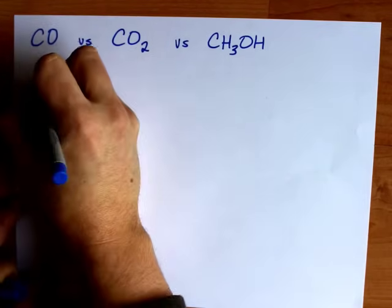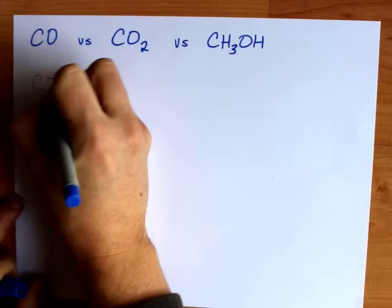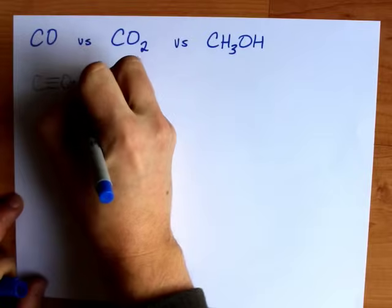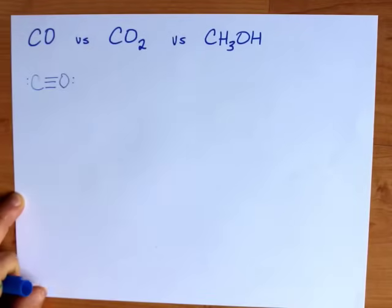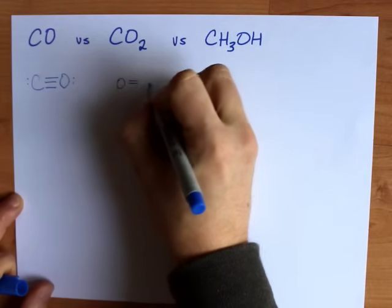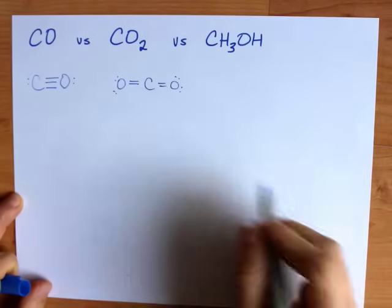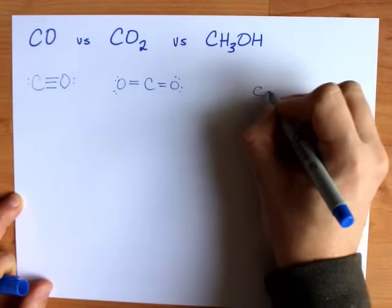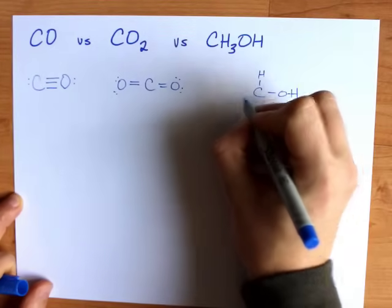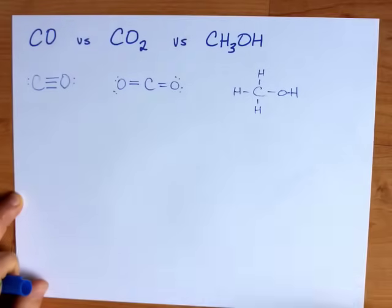The Lewis structure for carbon monoxide, even though I'm catching a lot of flack lately for drawing it this way even though it's correct, is a triple bond between carbon and oxygen. The Lewis structure for carbon dioxide is a double bond between carbon and each oxygen. And for methanol, I have carbon single bonded to the O, which is single bonded to the H, and then that carbon is also single bonded to each of the other H's.